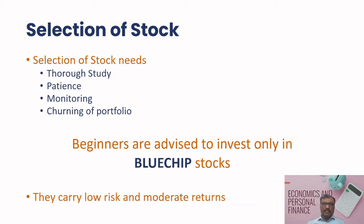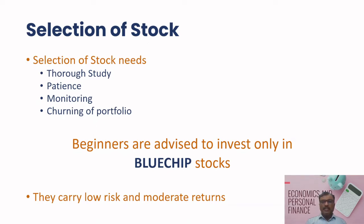The second principle is patience. Successful stock investing requires patience. It is essential to avoid making hasty decisions based on short-term market fluctuations. Instead, investors should have a long-term perspective and be prepared to hold their investment for an extended period. Next, monitoring is essential. Even after making an informed investment decision, you must continuously monitor the performance of your chosen stocks, tracking the company's progress, quarterly earnings reports, financial documents, and stock price.